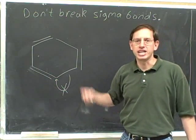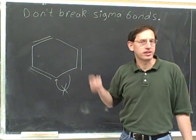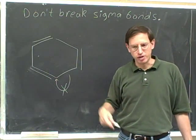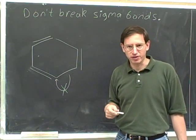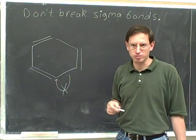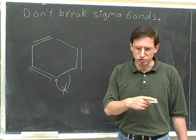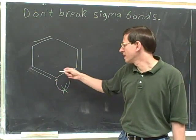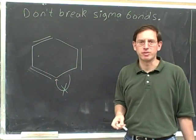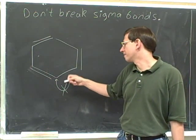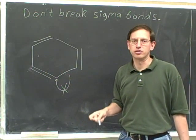When you're doing a reaction, it's perfectly okay to break sigma bonds. But when you're drawing resonance structures, you may not break a sigma bond, which means you may not have the tail on a single bond.